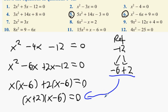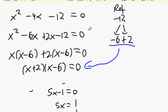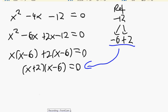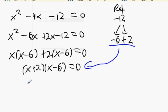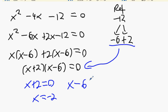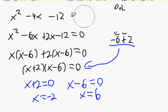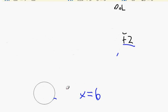You get x bracket x minus 6 plus 2 bracket x minus 6 equals zero, then x plus 2 bracket x minus 6 equals zero. You can go straight from the reference numbers to the brackets for 1x squared questions — that always works. So x plus 2 equals zero gives x equals minus 2, and x minus 6 equals zero gives x equals 6.